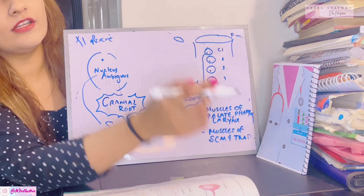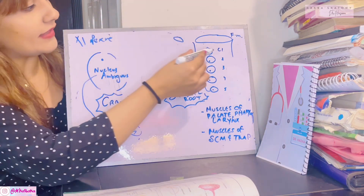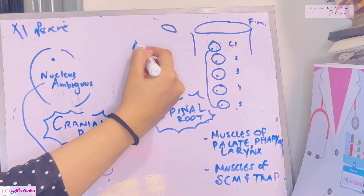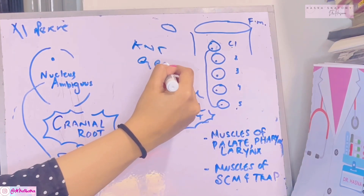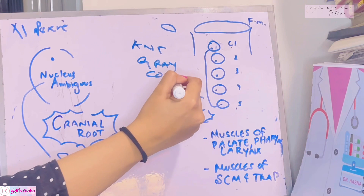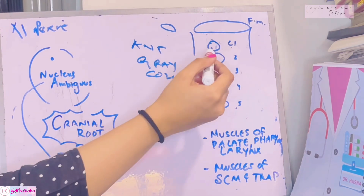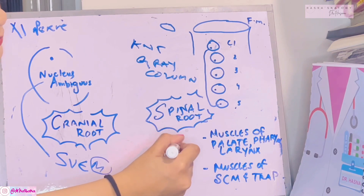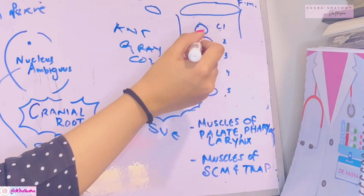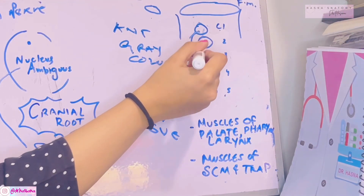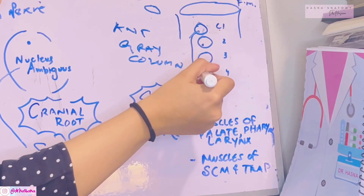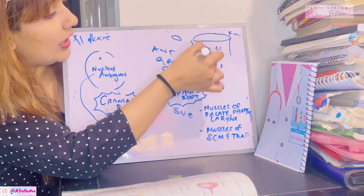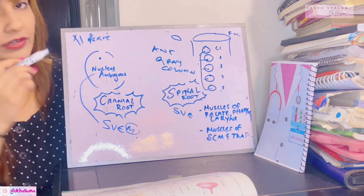The spinal root is formed in the spinal cord. Its nucleus is a long spinal nucleus running from C1 to C5 segments, located in the anterior gray column of the spinal cord. These nuclei also give rise to special visceral efferent fibers, which all unite within the vertebral canal to form the spinal root of the accessory nerve.